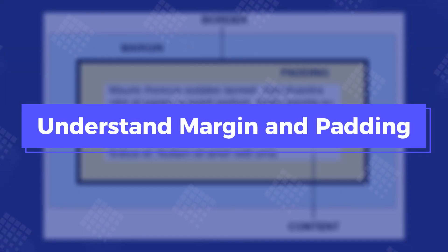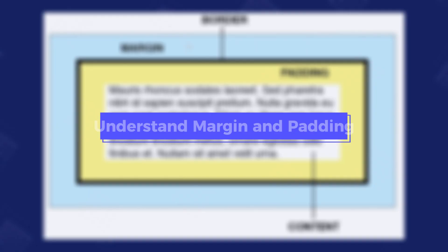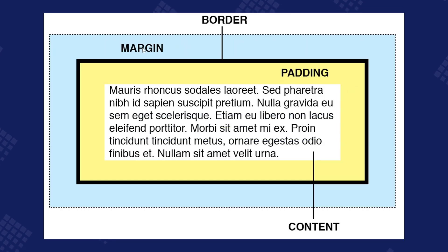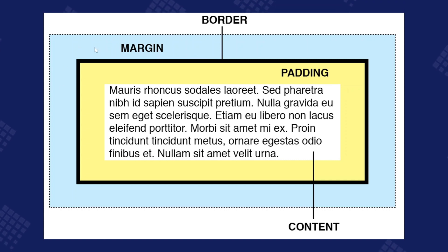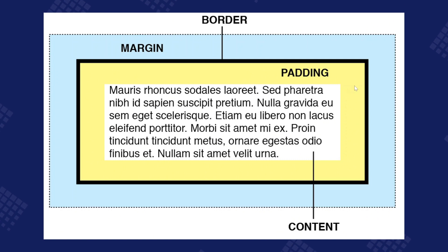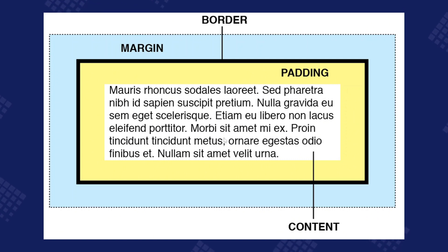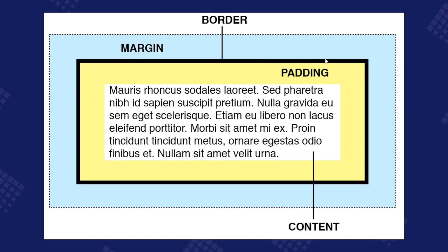Firstly, we need to understand margin and padding. Margin is the spacing surrounding an element. Padding is the spacing within an element — it's the content of the box. And border is the line that goes around the padding and content.